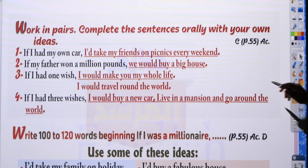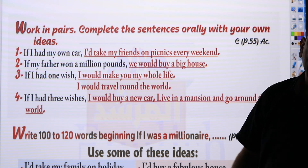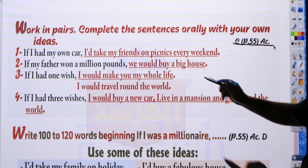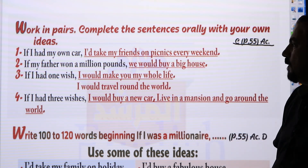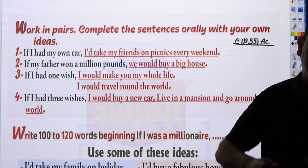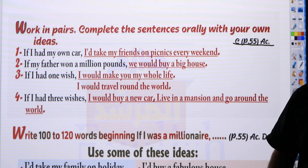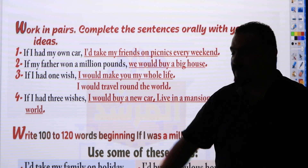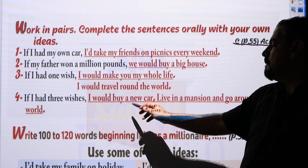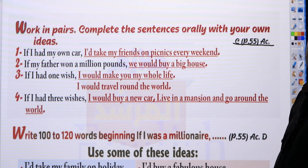The completion exercise — page 55, activity book. 'If I had my own car, I would take my friends on picnics every weekend.' 'If my father won a million pounds, we would buy a big house.' 'If I had one wish, I would make you my whole life' or 'I would travel around the world.' 'If I had three wishes, I would buy a new car, live in a mansion, and go around the world.'